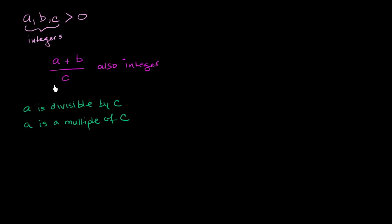So this is what we know: a, b, and c are integers, all greater than 0. The expression a plus b over c is also an integer. And a is a multiple of c, or in other words, c divides perfectly into a.